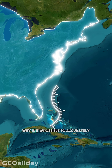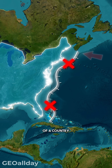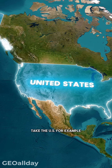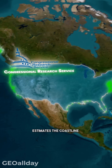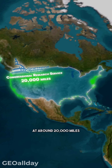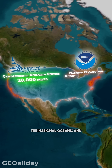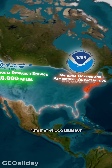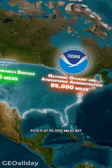Why is it impossible to accurately measure the coastline of a country? Take the United States for example. The Congressional Research Service estimates the coastline at around 20,000 miles, while the National Oceanic and Atmospheric Administration puts it at 95,000 miles.